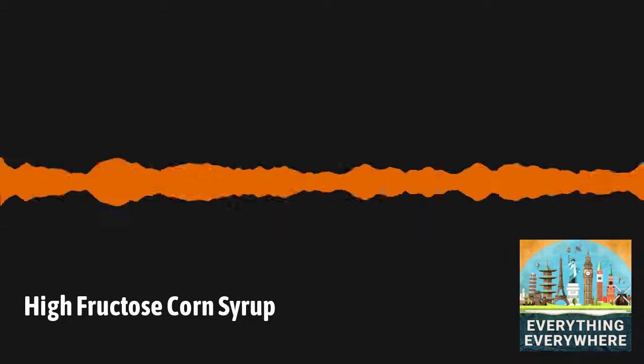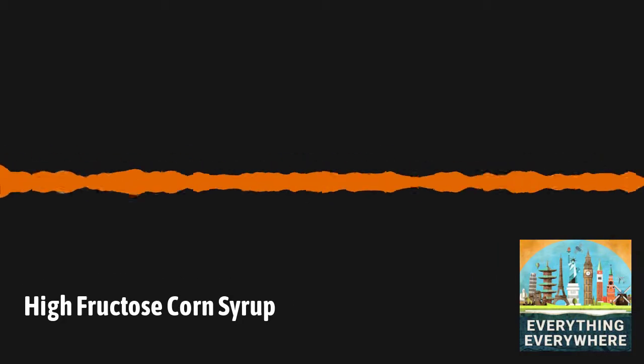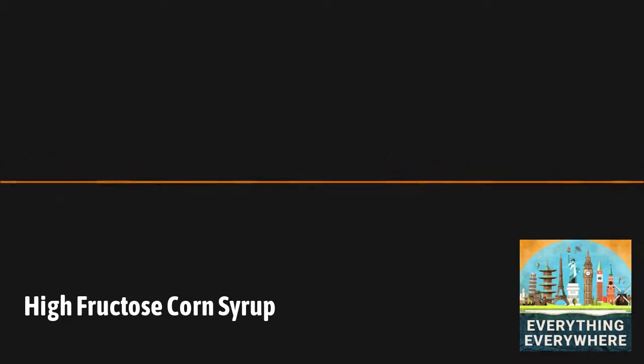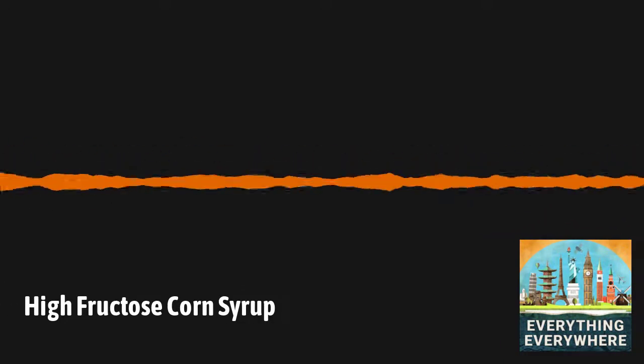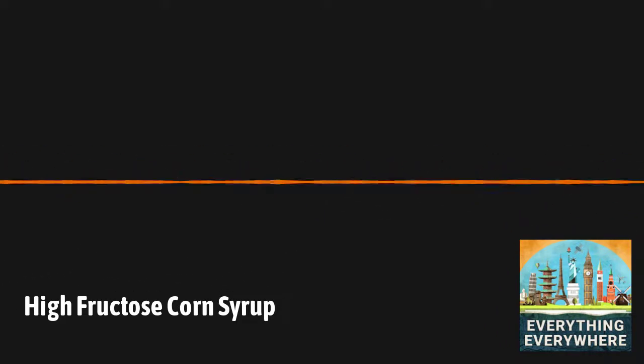Here I should explain what fructose is. Fructose is a type of sugar known as a monosaccharide. A monosaccharide is a simple form of sugar and are the building blocks of all carbohydrates. There are three monosaccharides: glucose, fructose, and galactose.